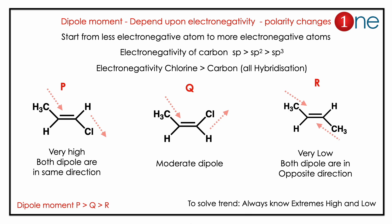Dipole moment is a physical property that depends on electronegativity, because electronegativity dictates polarity. Normally, the dipole points from the less electronegative atom to the more electronegative atom. Chlorine has higher electronegativity than carbon — it is highest because it is near fluorine. If you look at structure P, both dipole directions point the same way.